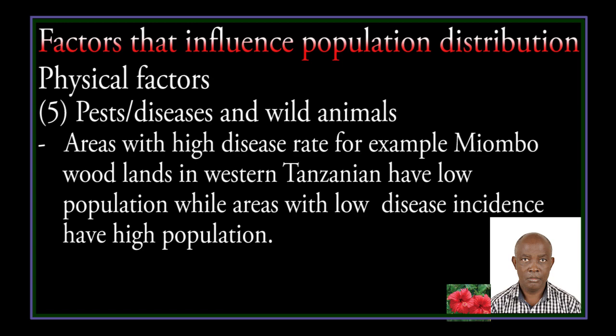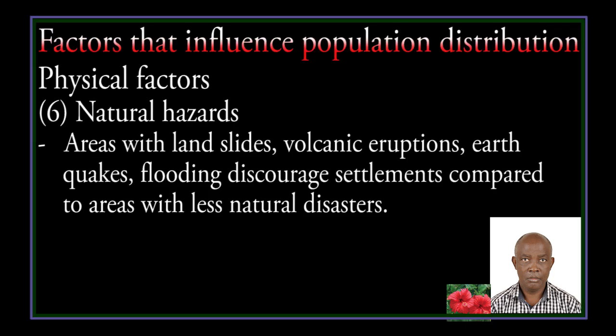While areas with low disease incidence have high population. Effects of natural hazards: areas with landslides, volcanic eruptions, earthquakes, and flooding discourage settlement compared to areas with fewer natural disasters.